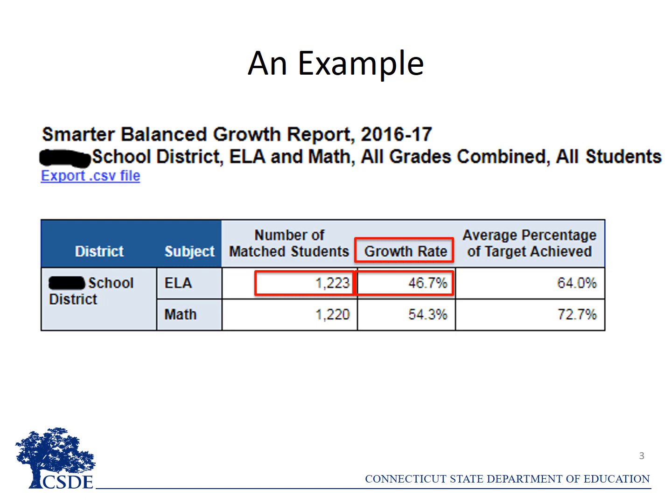In math, of the 1,220 matched students, 54.3 percent or 663 students met or exceeded their growth targets, while 45.7 percent or 557 students did not meet their individual targets.